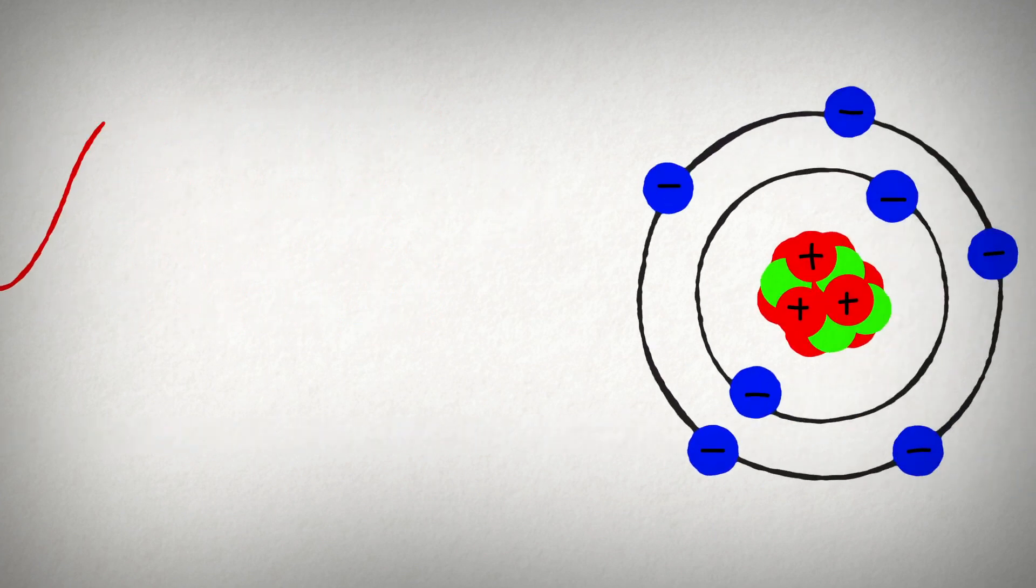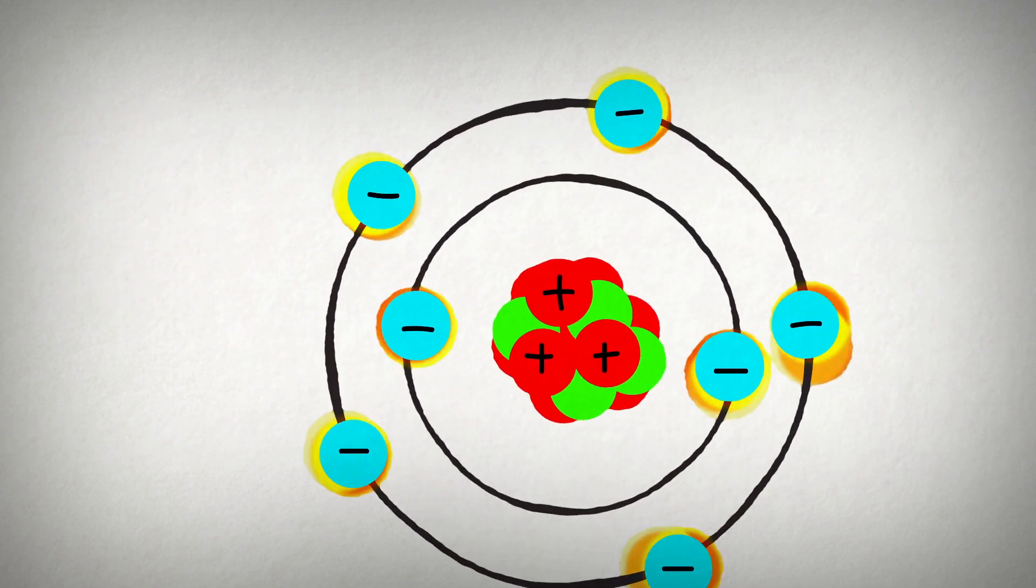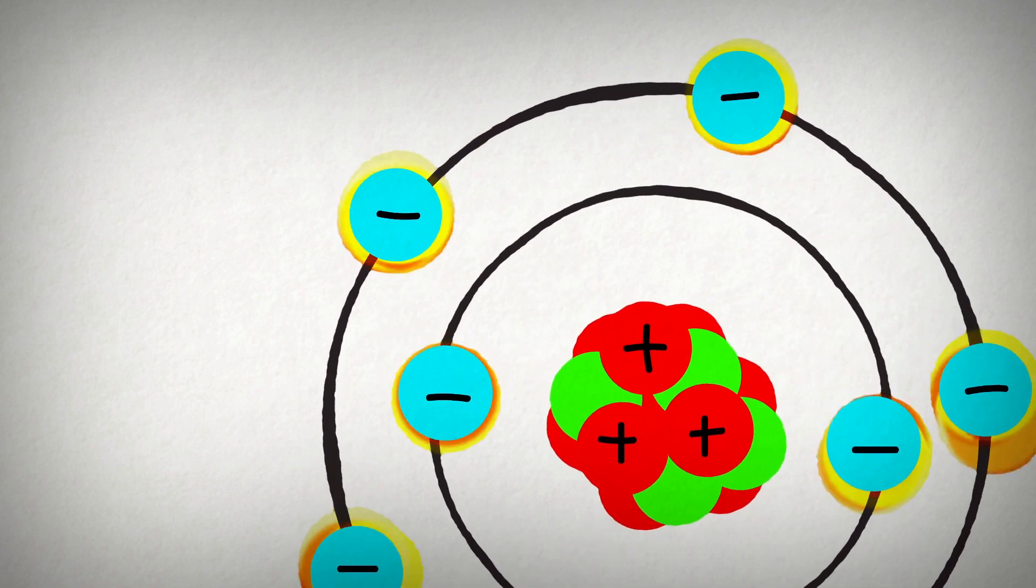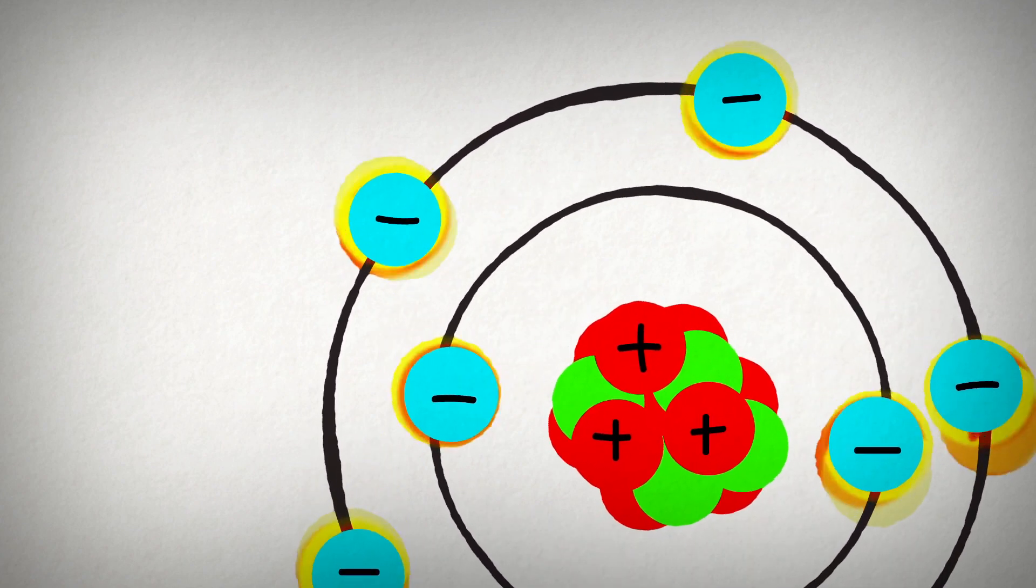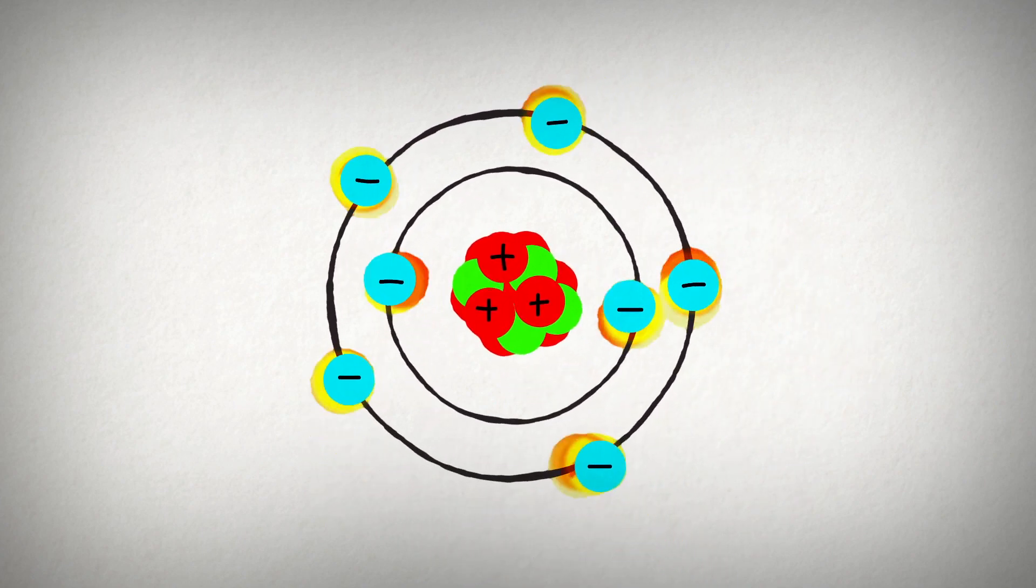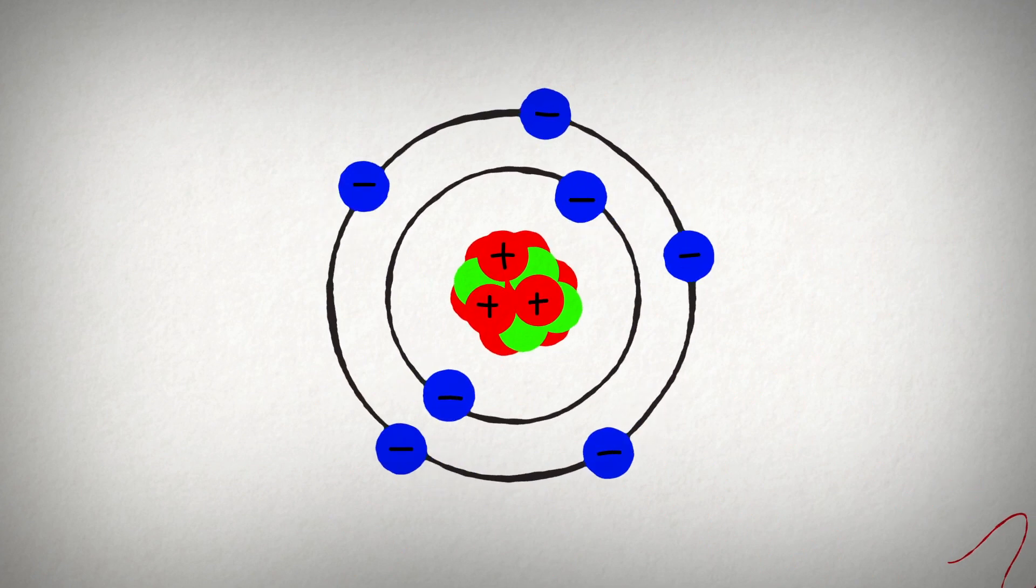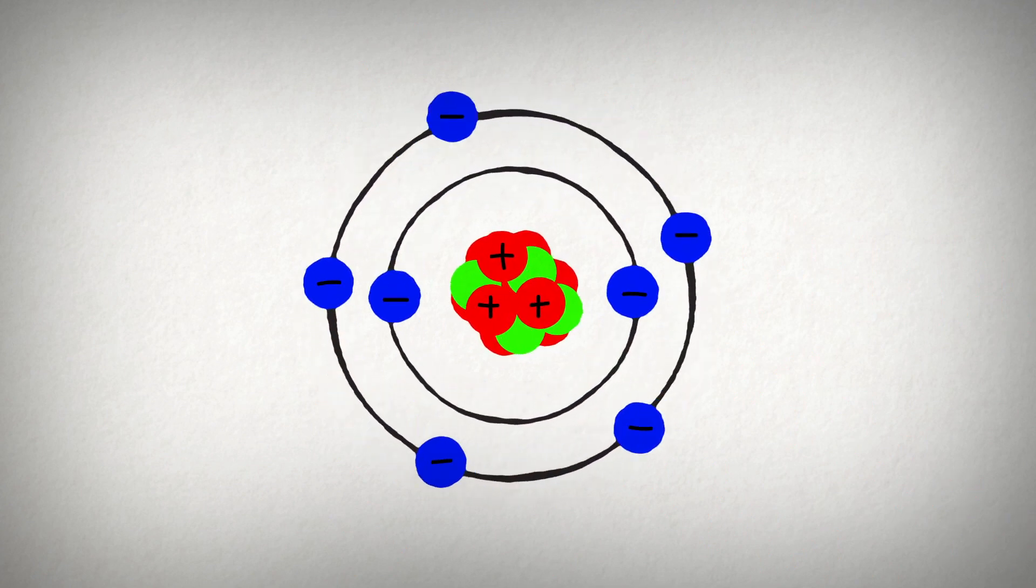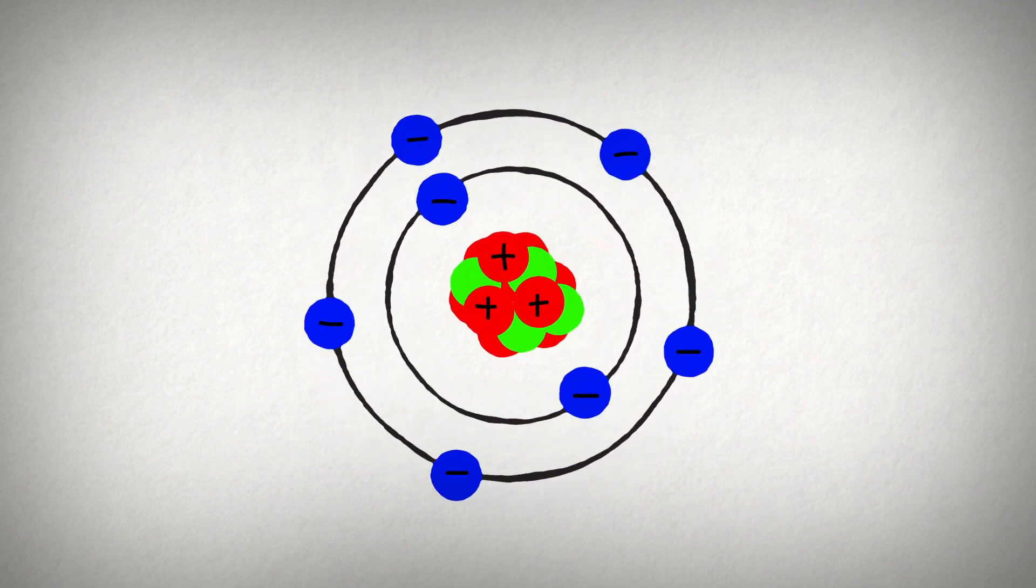When an x-ray encounters an atom, its energy is absorbed by the atom's electrons. Electrons occupy special energy states around an atom. Since the absorbed energy is not large enough to release the electron, the energy must be re-emitted in the form of a new x-ray with the same energy as the original. This process is called elastic scattering.